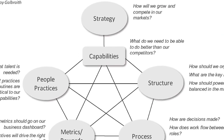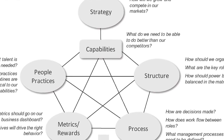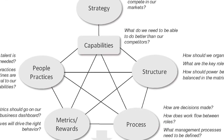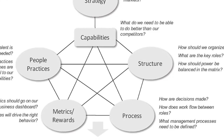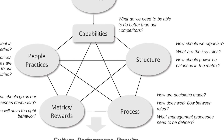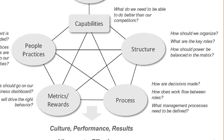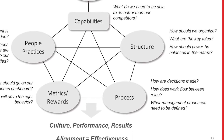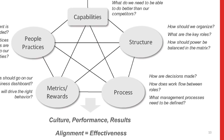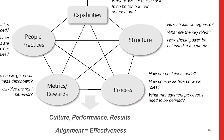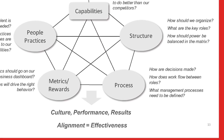Most importantly, we look at capabilities — what does this organization have to be really good at, better than our competition, in order to succeed? This gives any leader four levers to design. Structure, which is about power relationships and the architecture of the organization.